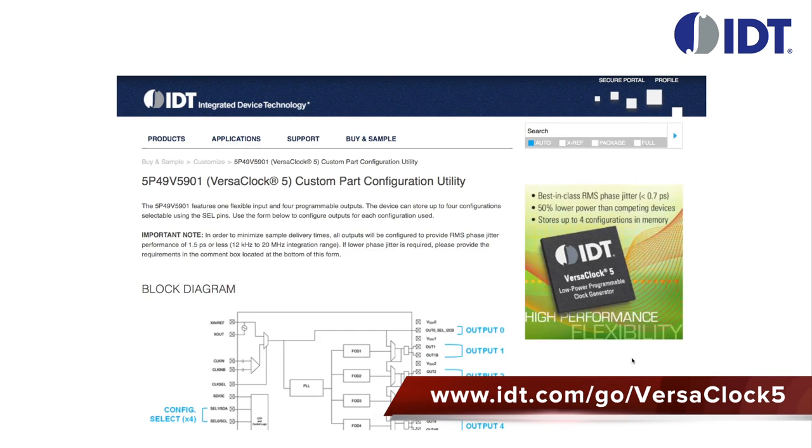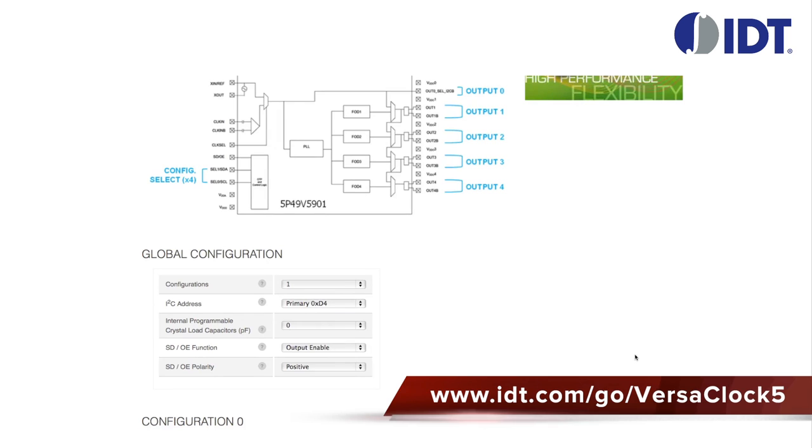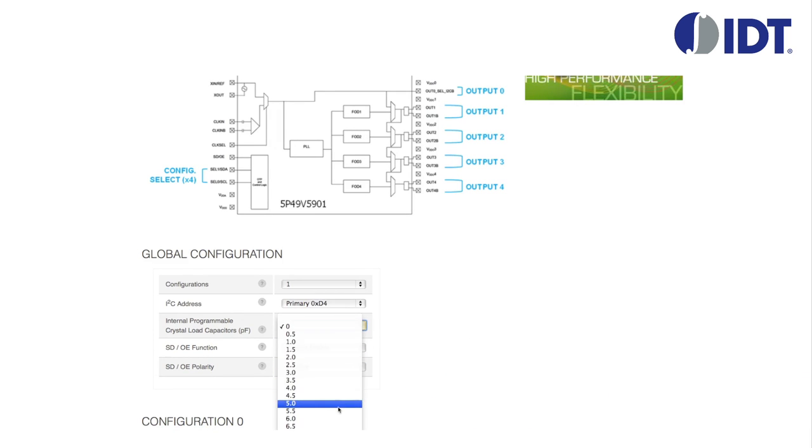If you use the VersaClock 5 custom part configuration utility, just enter this 5.5 pF value into the relevant field as shown here.